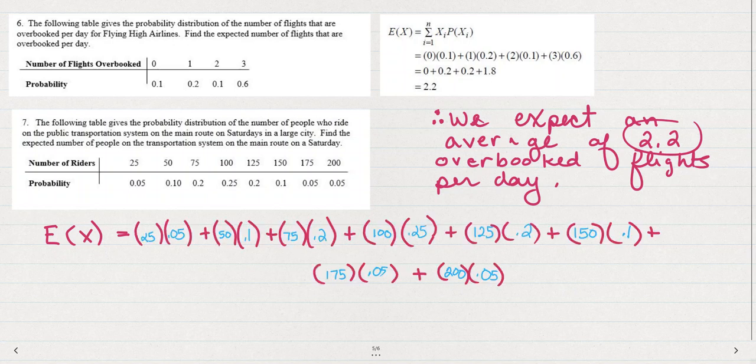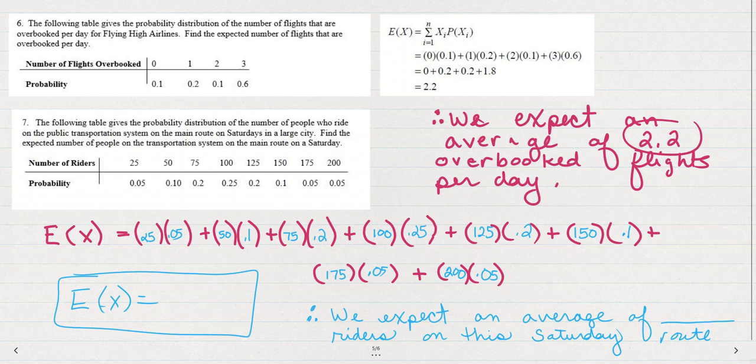Try that on your paper. Or once we've written that out and multiplied and added, multiply and add, multiply and add, and so on, we'll get an expected value. And then we could make our statement. Therefore, we expect an average of blank riders on this Saturday route, on this main route, on any given Saturday.